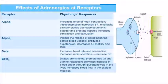Beta 1 is excitatory on the heart: it increases heart rate, contraction, renin secretion, and BP. Beta 2 shows inhibitory effects: dilatation of bronchioles, GI and uterine relaxation, increased blood sugar through glycogenolysis, and increased blood flow to muscles.